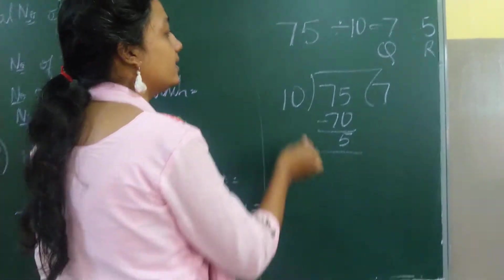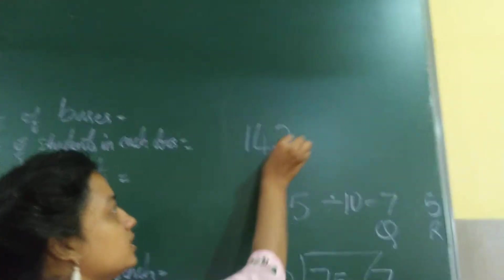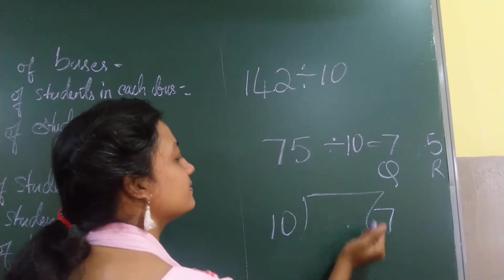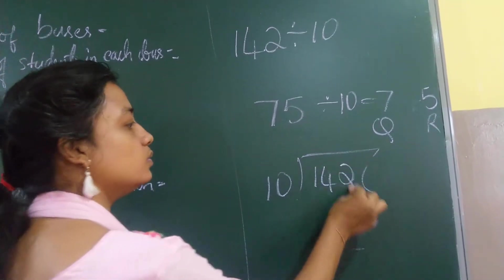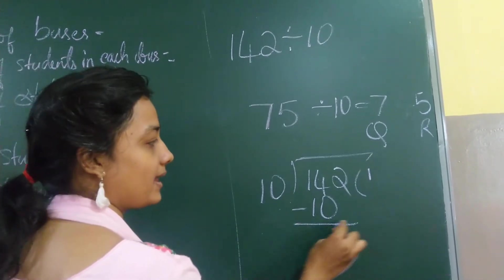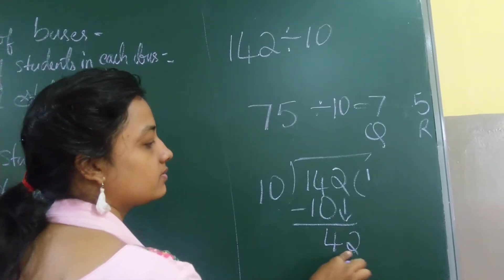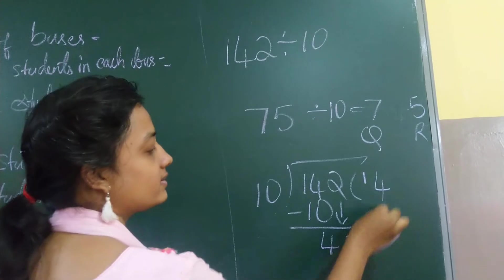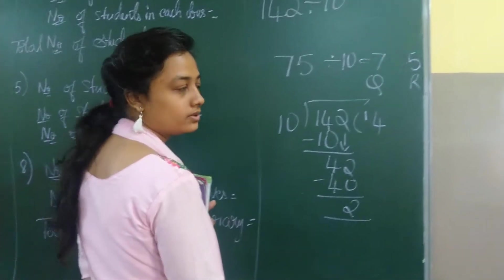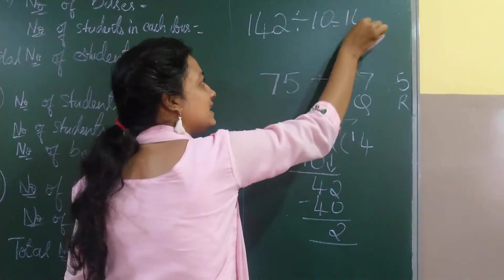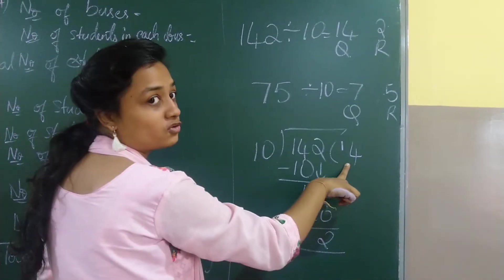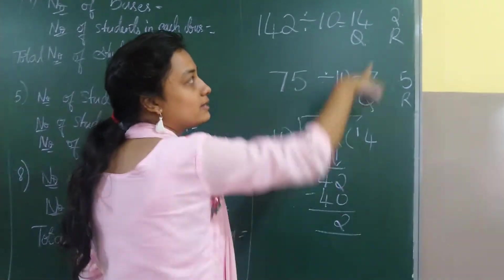Similarly, if you have a 3-digit number, let us take 142 divided by 10. 10 times 1 is 10, bring down 42. 10 times 4 is 40, remainder is 2. So 14 is my quotient and 2 is my remainder.